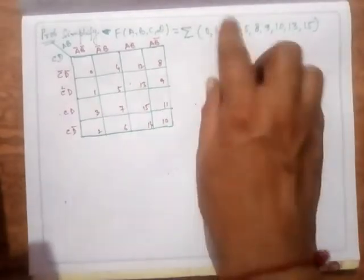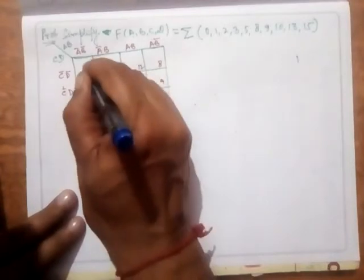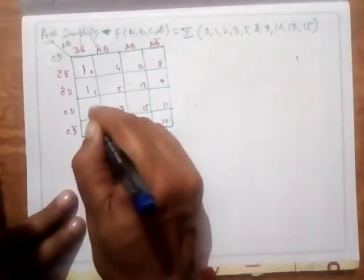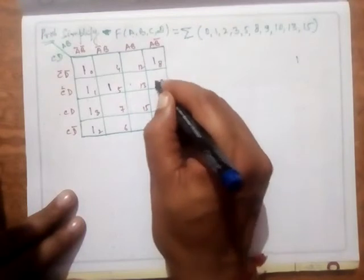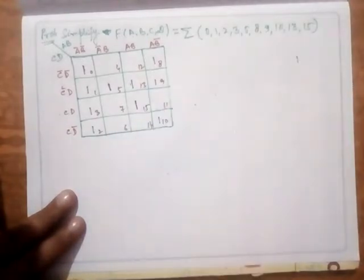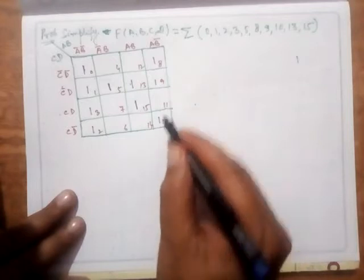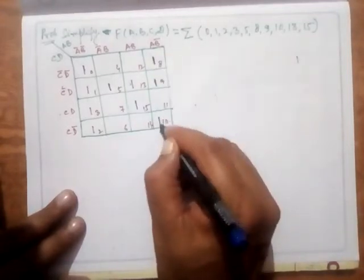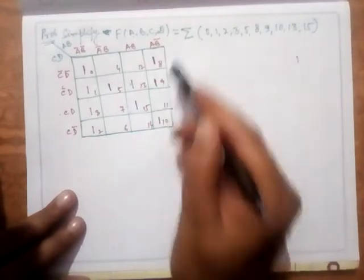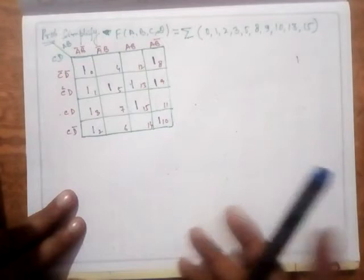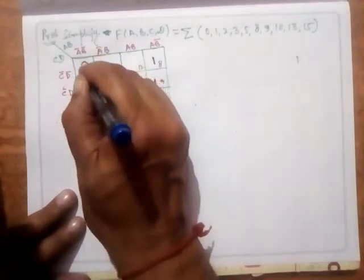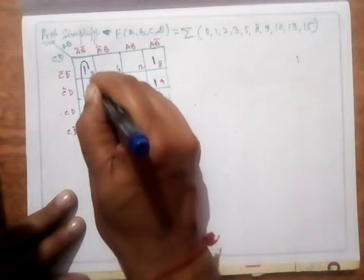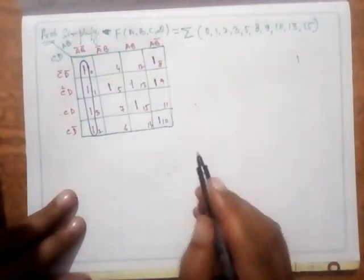I substitute a 1 on the corresponding minterm positions: 0, 1, 2, 3, 5, 8, 9, 10, 13, and 15. First, I look for the biggest group. There is no octet possible here, so I look for a quad — a group of four minterms. I find that a quad is possible here and name this Group 1.